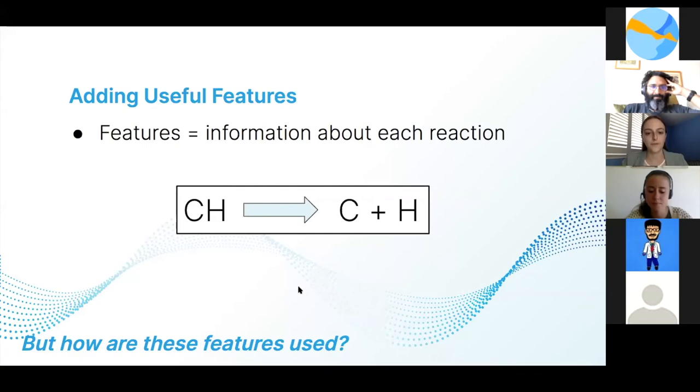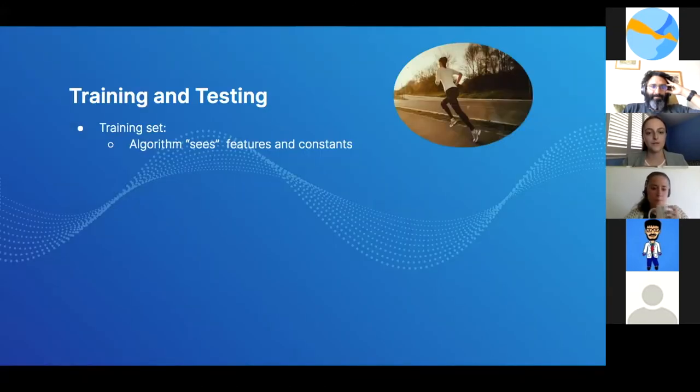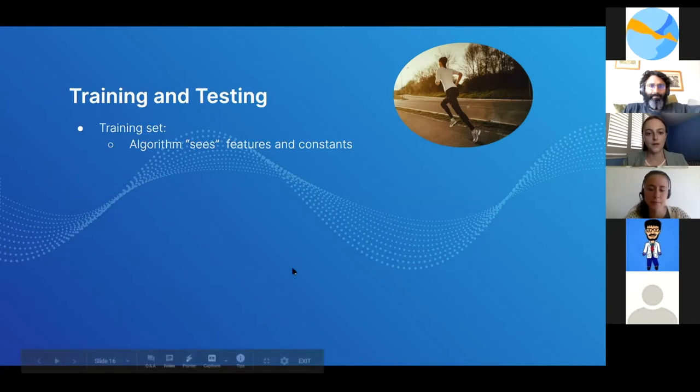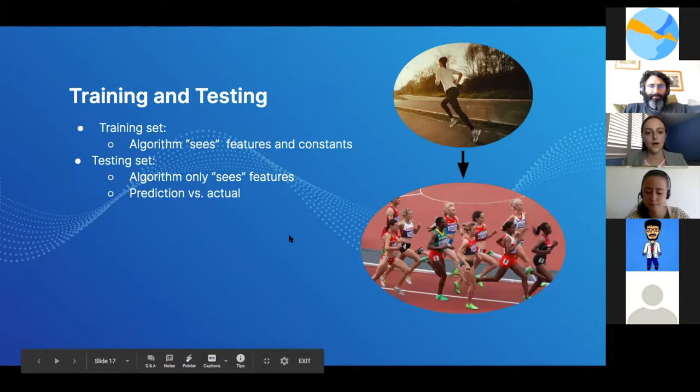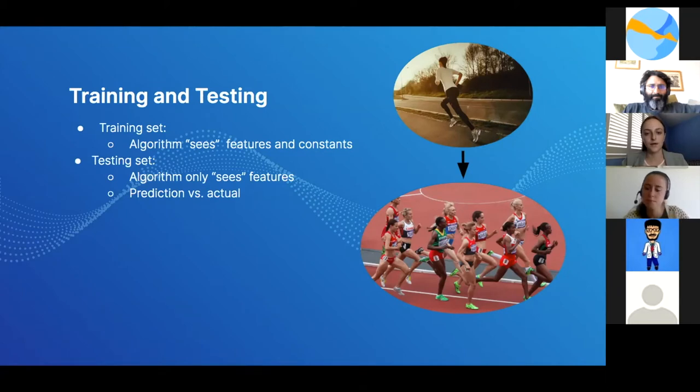How are these features used? For that we'll explain training and testing. The whole dataset is split into a training set, which is typically larger, and a testing set, which is smaller. In the training set the algorithm sees both the features and the constants—features are inputs and constants are the related outputs. Then for the testing set the algorithm only sees the features and predicts constants based on those features. We look at the predictions versus actual values to see how good our algorithm is. You can think of it as training for running a race—you build muscle mass and become good at running, then compete to see how good you actually are.